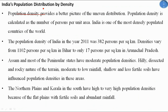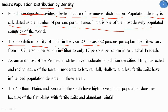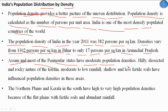Population density provides a better picture of uneven distribution. It is calculated as the number of persons per unit area. India is one of the most densely populated countries of the world. The population density of India in 2011 was 382 persons per square kilometer, varying from 1,102 persons per square kilometer in Bihar to only 17 in Arunachal Pradesh. Assam and most peninsular states have moderate densities due to hilly, dissected, rocky terrain, moderate to low rainfall, and shallow, less fertile soils.